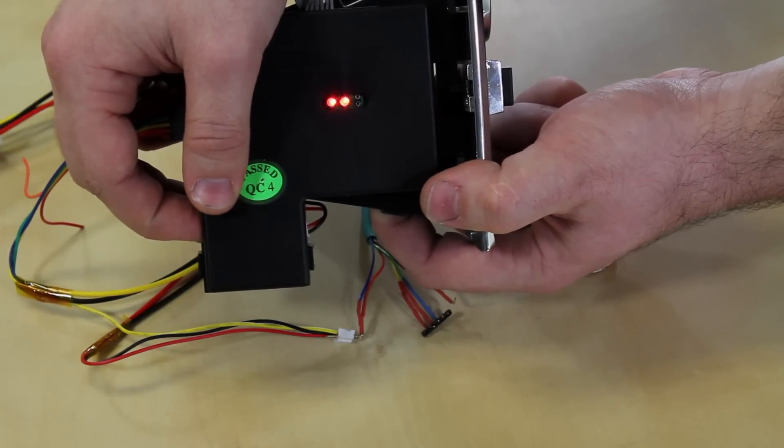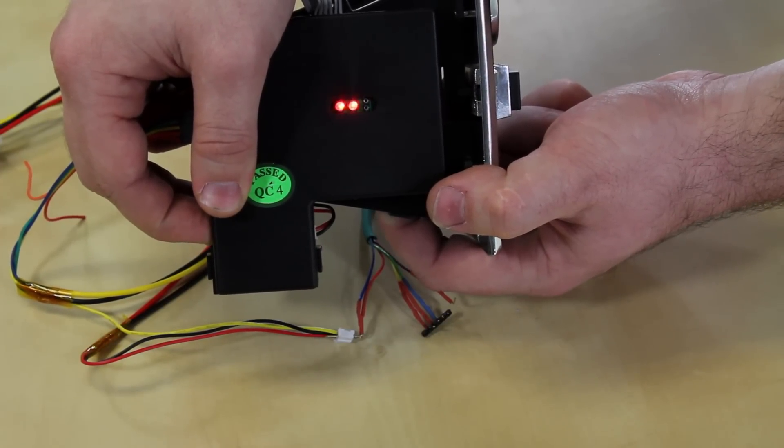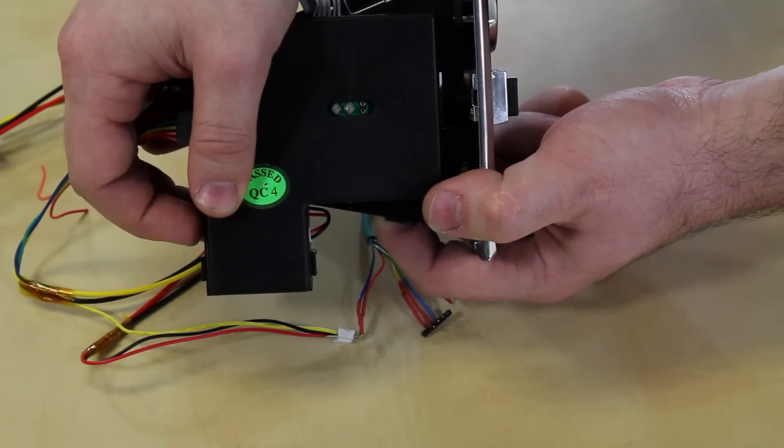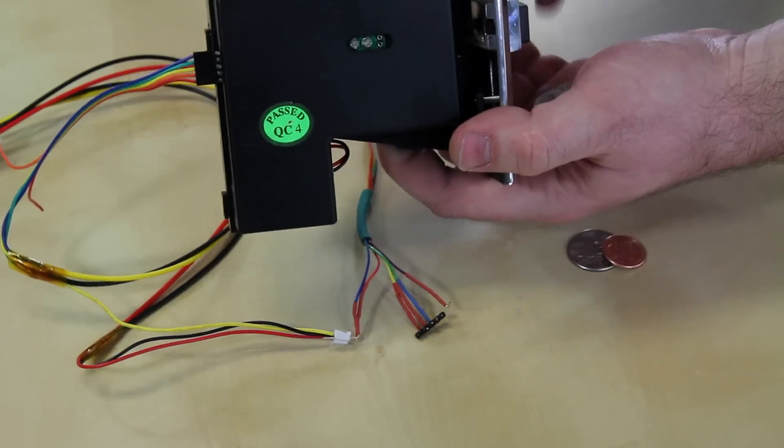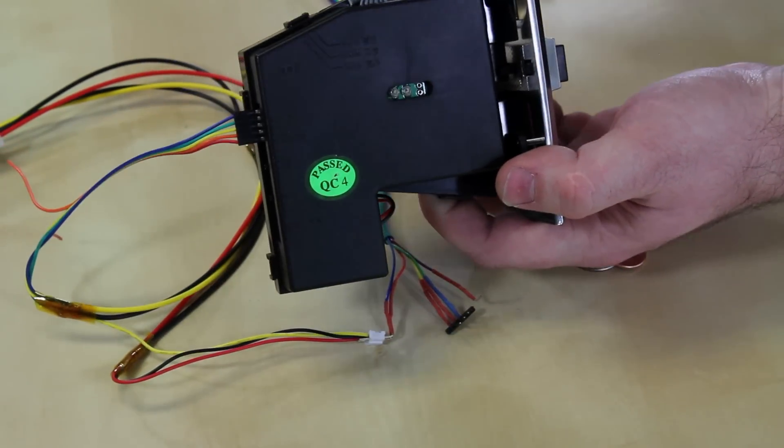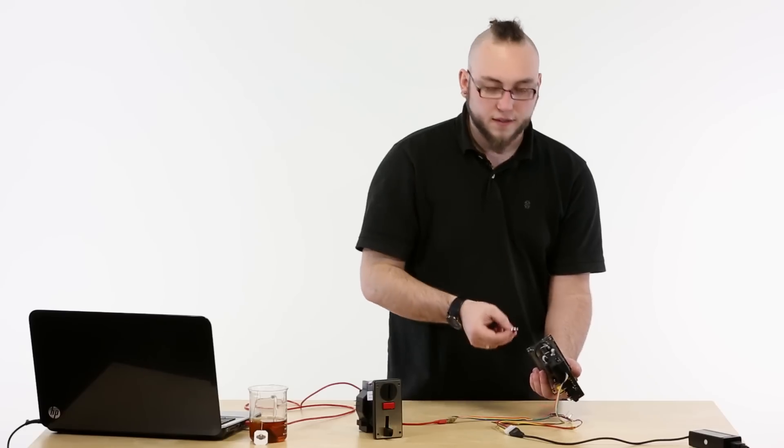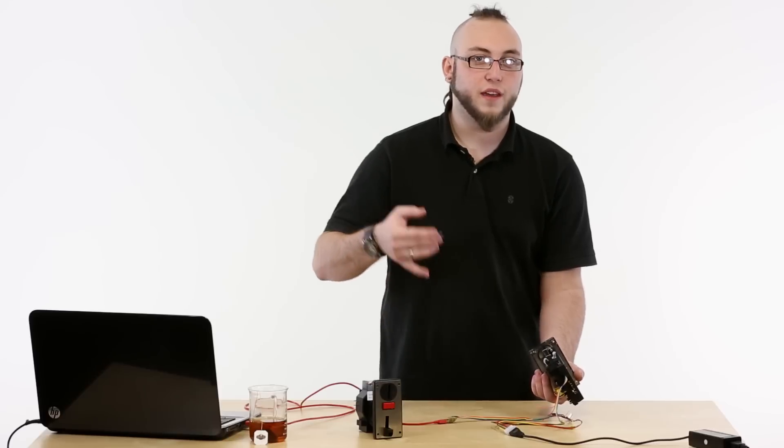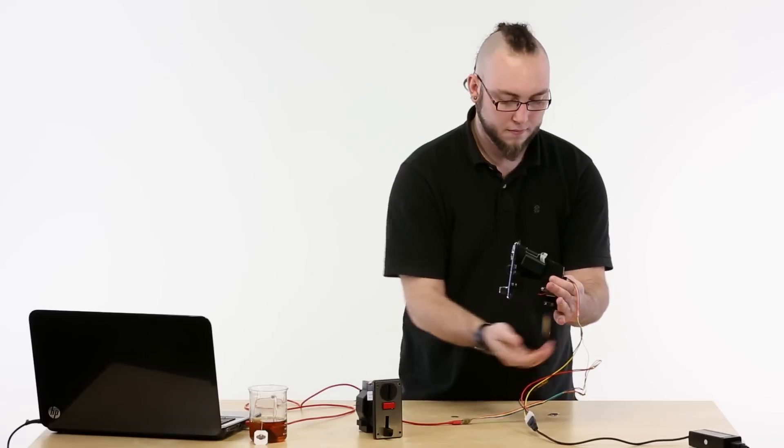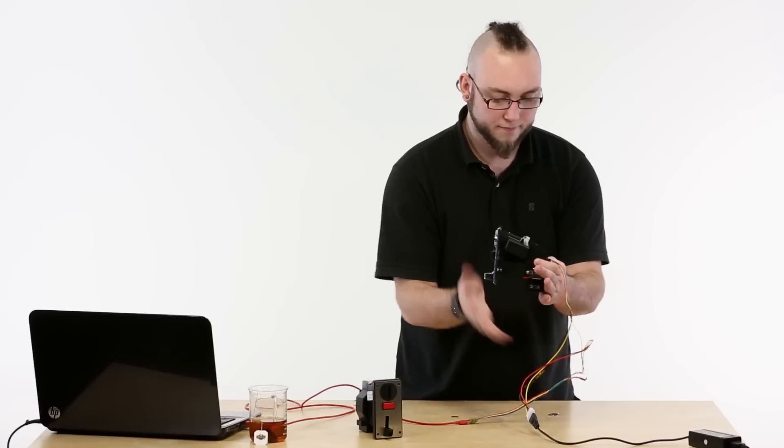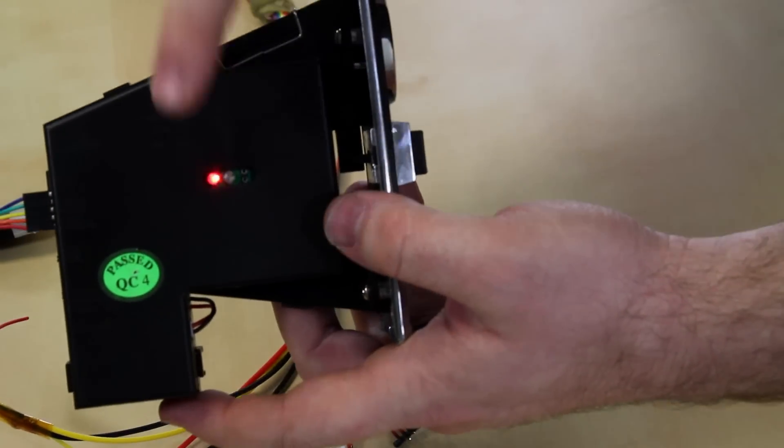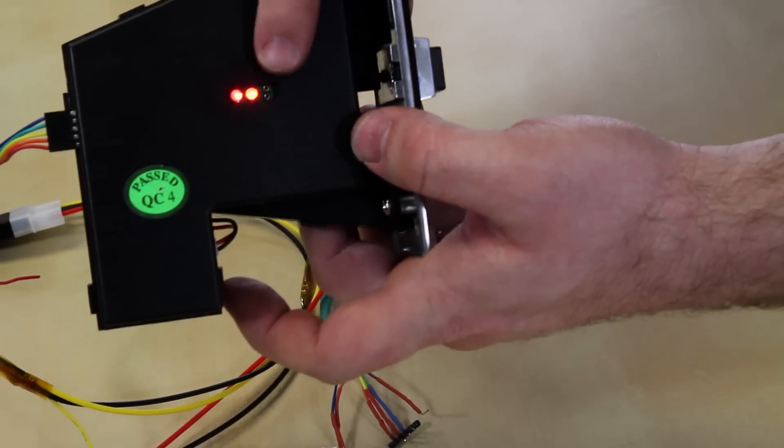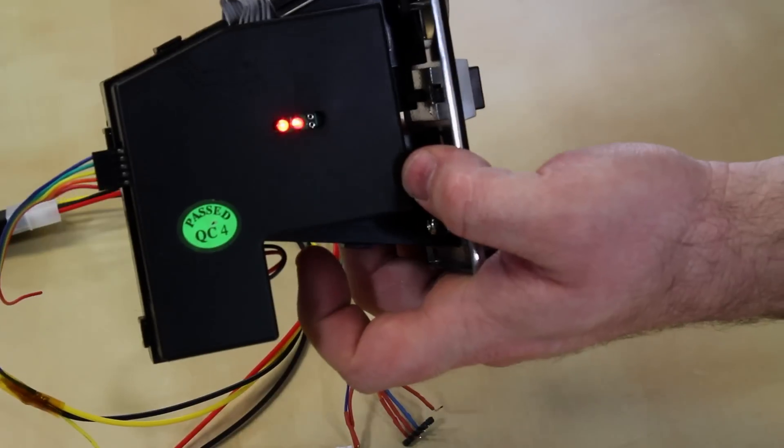To program the first coin all you do is you hold that button again and then when you let go of it the first LED should start flashing. So now we'll just grab a sample of one of our coins and we'll just drop it into the coin slot and you're going to do that 20 times before it actually accepts the coin parameters. Now you can see that first LED is really blinking like crazy and that means it's accepted the coin parameters for our nickel.